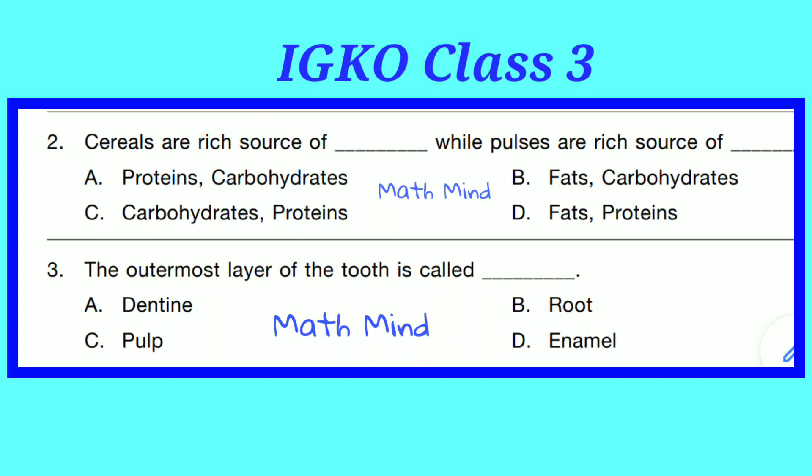Question No. 2. Cereals are a rich source of carbohydrate, while pulses are a rich source of protein. Option C is correct.